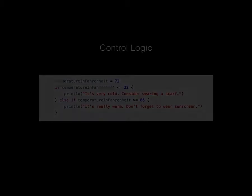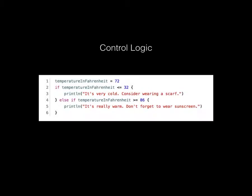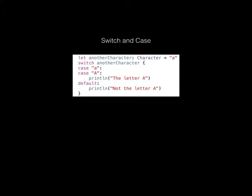In terms of control logic, ifs, do-whiles, and fors are all pretty much the same as you're used to, but the extra grammar of the parentheses has been taken away — you don't need them, though you can still use them. It just reduces the amount of code you write. Switches and cases are very different in one respect — what do you notice is lacking in that example of a switch case? Break. Break is implied as a default in Swift, so you no longer need to write it unless you want to prematurely exit.